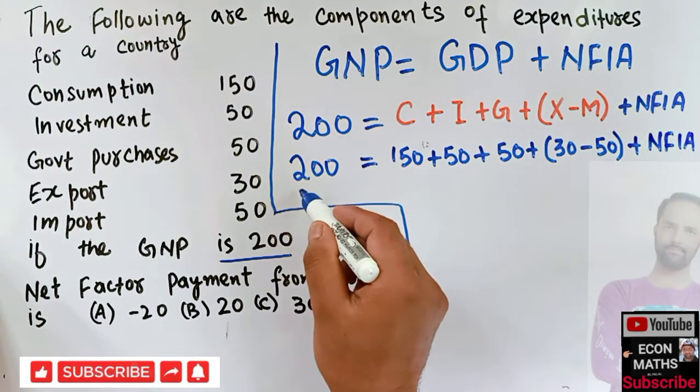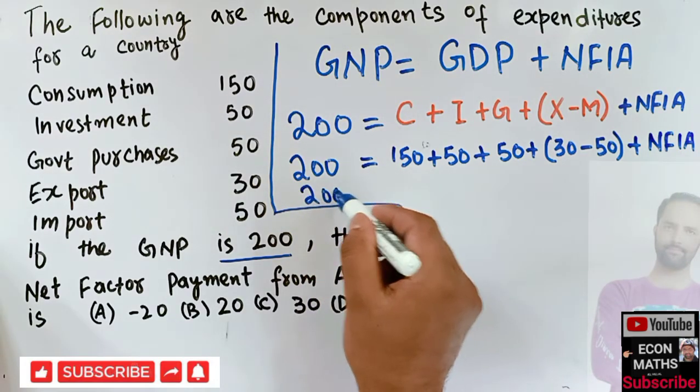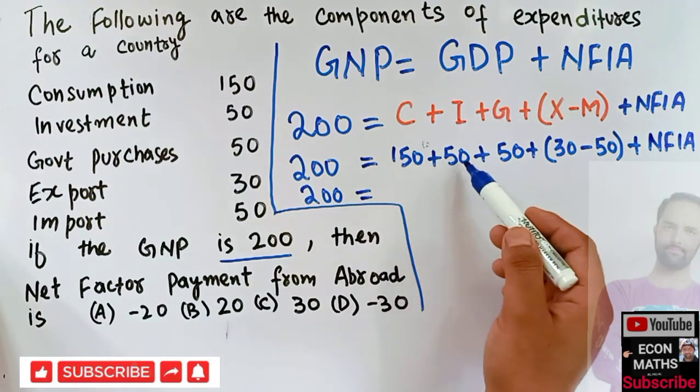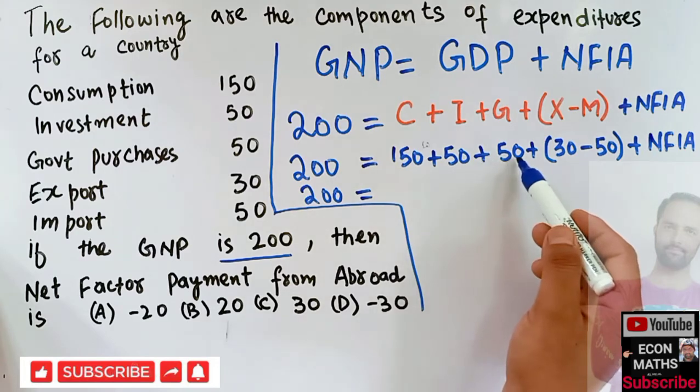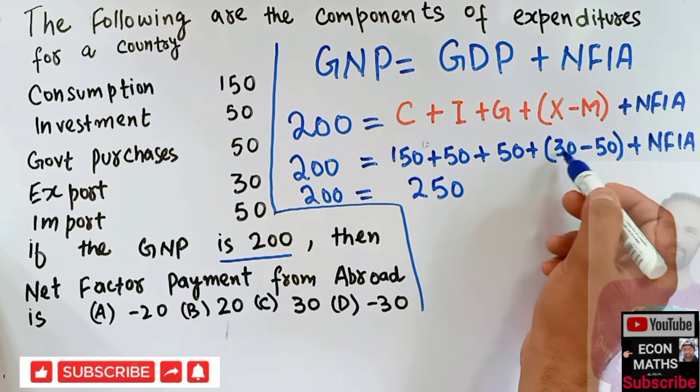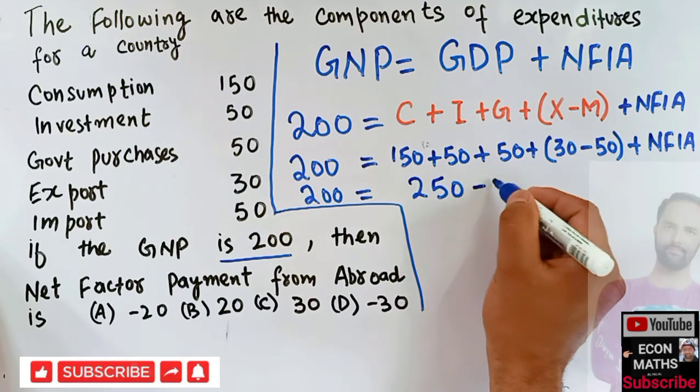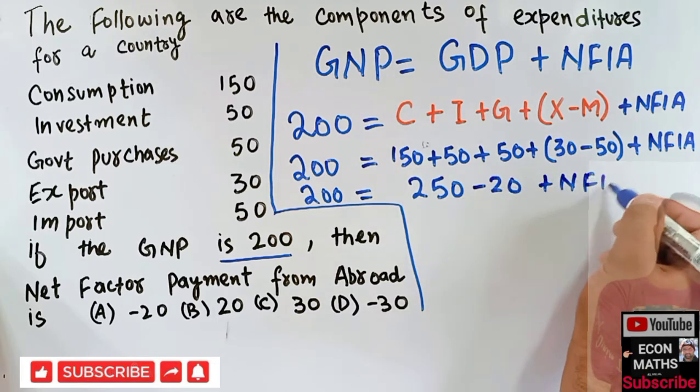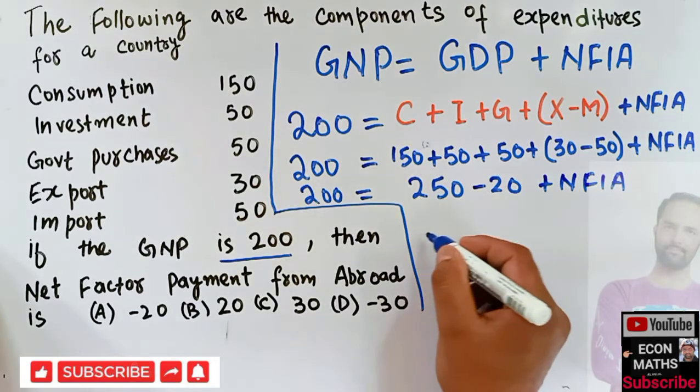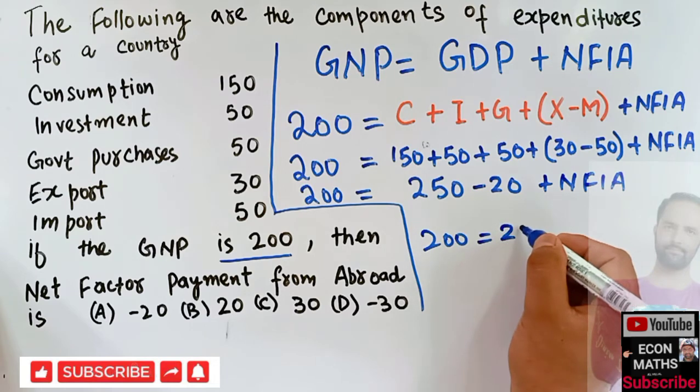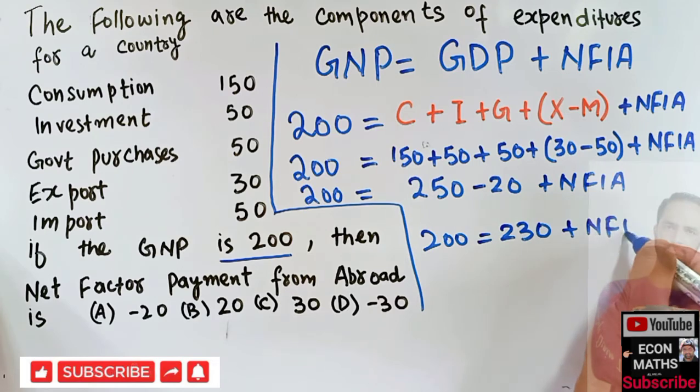So 200 will be equal to—let's add them up. So we have 100 plus 150 plus 50 which is 200—this is 250. So we get 250, then we have 30 minus 50, so this is minus 20, plus net factor income from abroad. So we have 200 is equal to 250 minus 30 is—sorry, this is 230 plus NFIA.